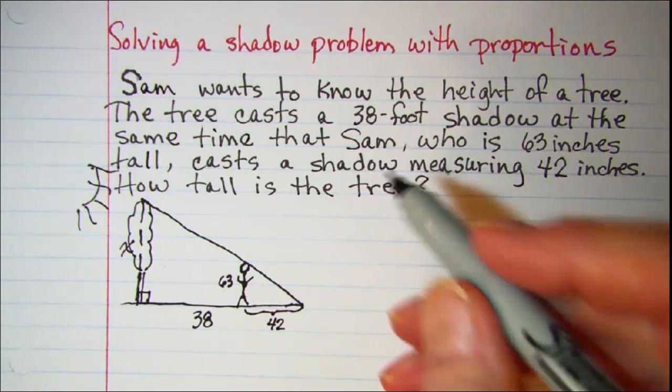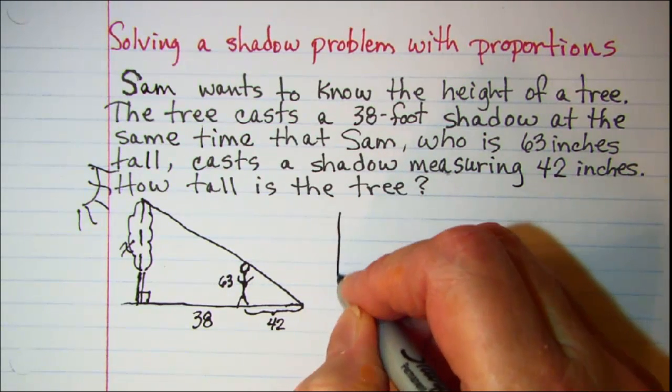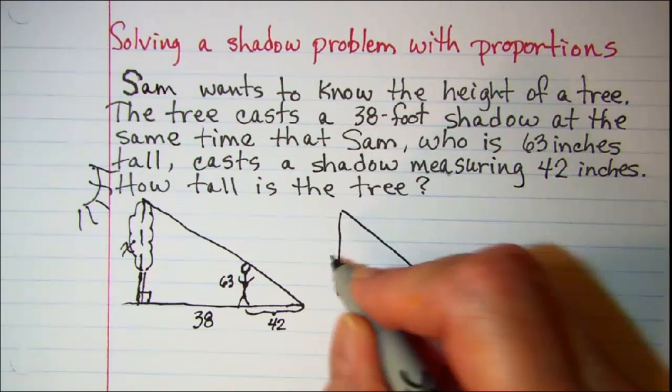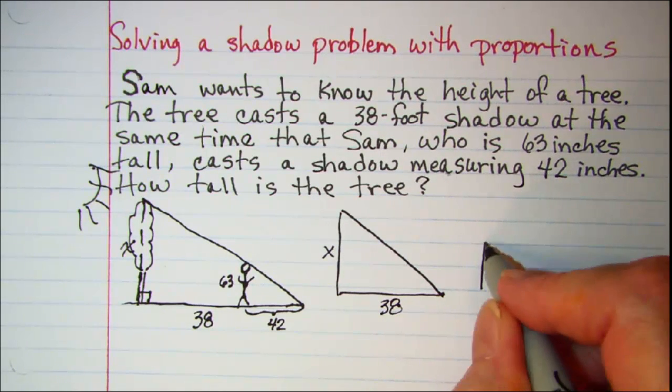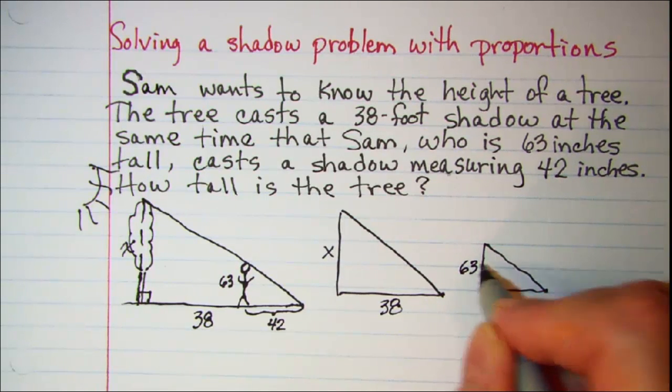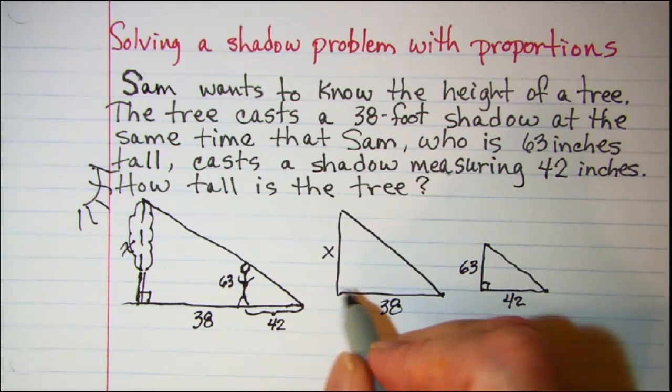Now if you need to, you can separate these two diagrams. So this is my tree. The height is X and the shadow is 38 and this is Sam. And his height is 63 and his shadow is 42. And there's my right angles.